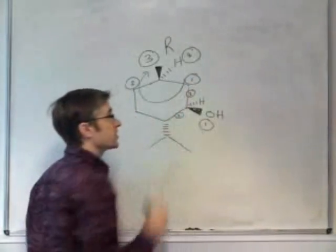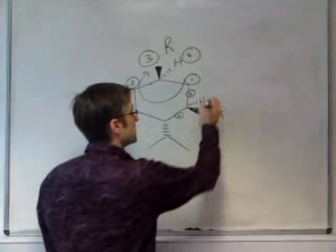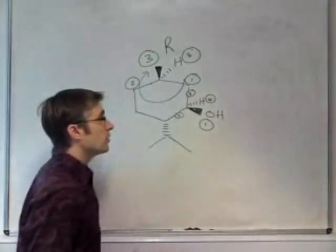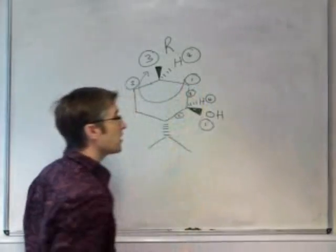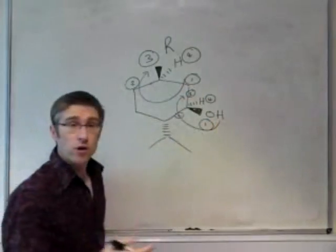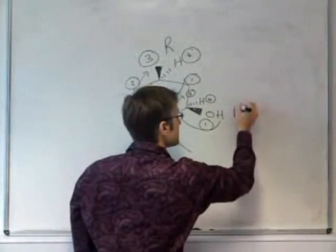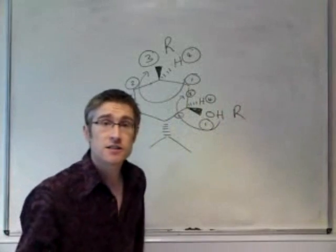So we label this as priority two. This bond as priority three. And of course the hydrogen, lowest atomic mass, is priority four. We look at the molecule. The hydrogen is going away from us. So we can simply go from one to two to three. And what you'll see is this is going clockwise. It's a right-handed circle. So this is also an R stereocenter.